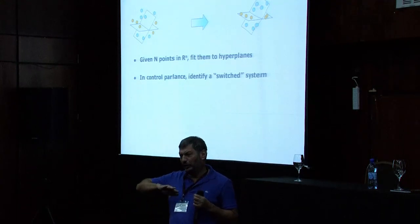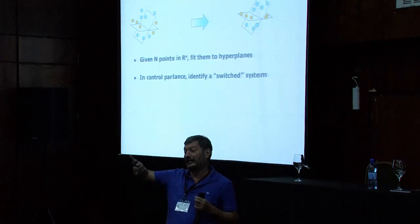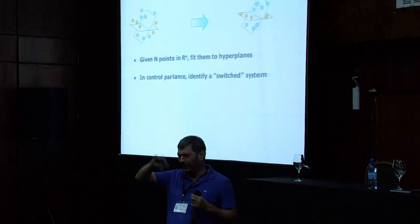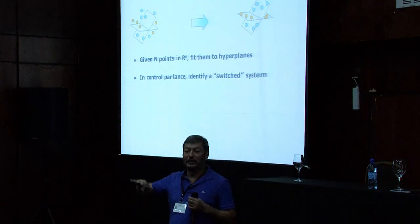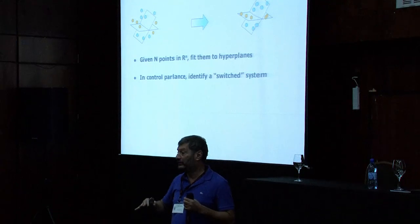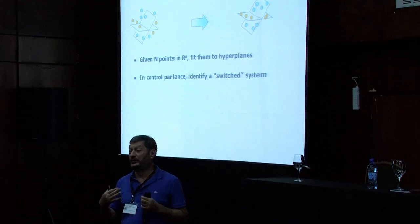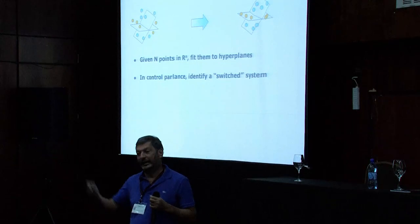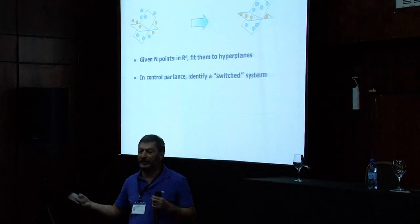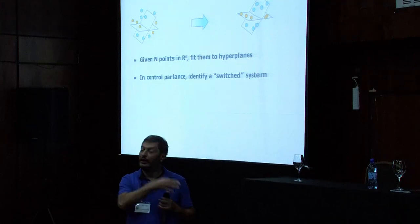Let me give one example from identification of switched ARX models — or since we're at an LPVS conference, think of this as identifying an LPV system where your scheduling parameter only has a finite number of values. You can connect this with classical machine learning: each one of your subsystems is linear, therefore the data generated by each subsystem lives in a subspace. I give you a bunch of points and what you need to do is subspace clustering — put those points into hyperplanes. The problem is hard because you don't have the labels.